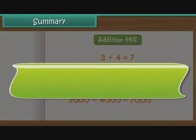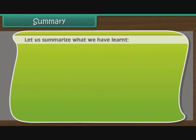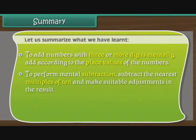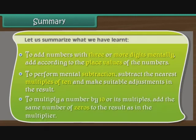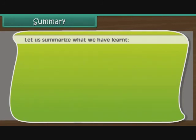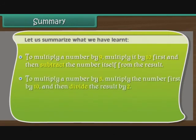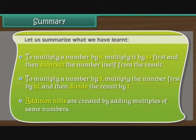Summary. Let us summarize what we have learnt. To add numbers with 3 or more digits mentally, add according to the place values of the numbers. To perform mental subtraction, subtract the nearest multiples of 10 and make suitable adjustments in the result. To multiply a number by 10 or its multiples, add the same number of zeros to the result as in the multiplier. To multiply a number by 9, multiply it by 10 first and then subtract the number itself from the result. To multiply a number by 5, multiply the number first by 10 and then divide the result by 2. Addition Hills are created by adding multiples of same numbers.